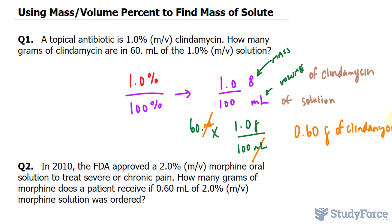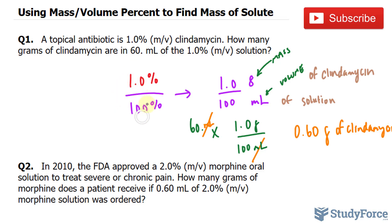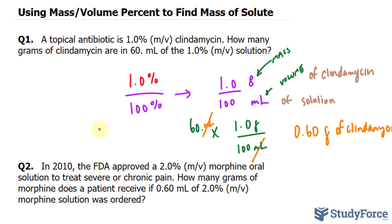To break this down further, in order to be successful with these types of problems, you need to understand how to go from a percentage to a fraction — you divide by 100%. Then you dedicate the numerator of that fraction to the mass and the denominator to the volume of the solution. Finally, we multiplied the volume of the medicine bottle, which was 60 milliliters, by this ratio to find the mass of the active ingredient, clindamycin.